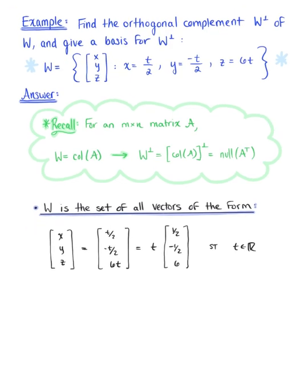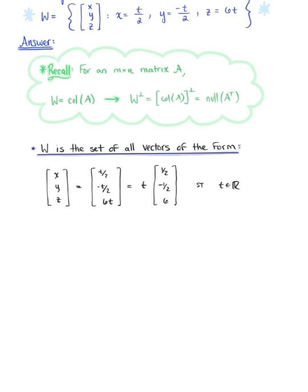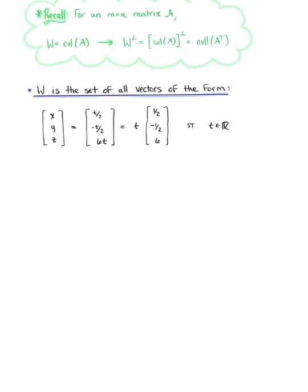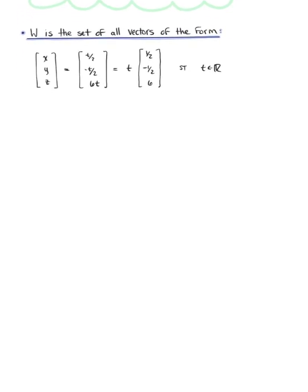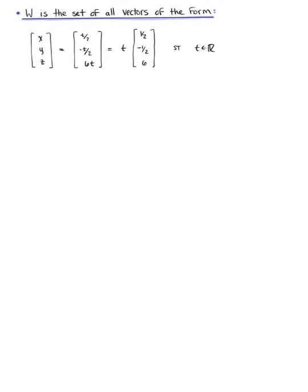Giving us a little bit more room, we can use this decomposition to help us make the following conclusions. From here, we can say that W is in the column space of matrix A with the components 1 half, negative 1 half, 6.